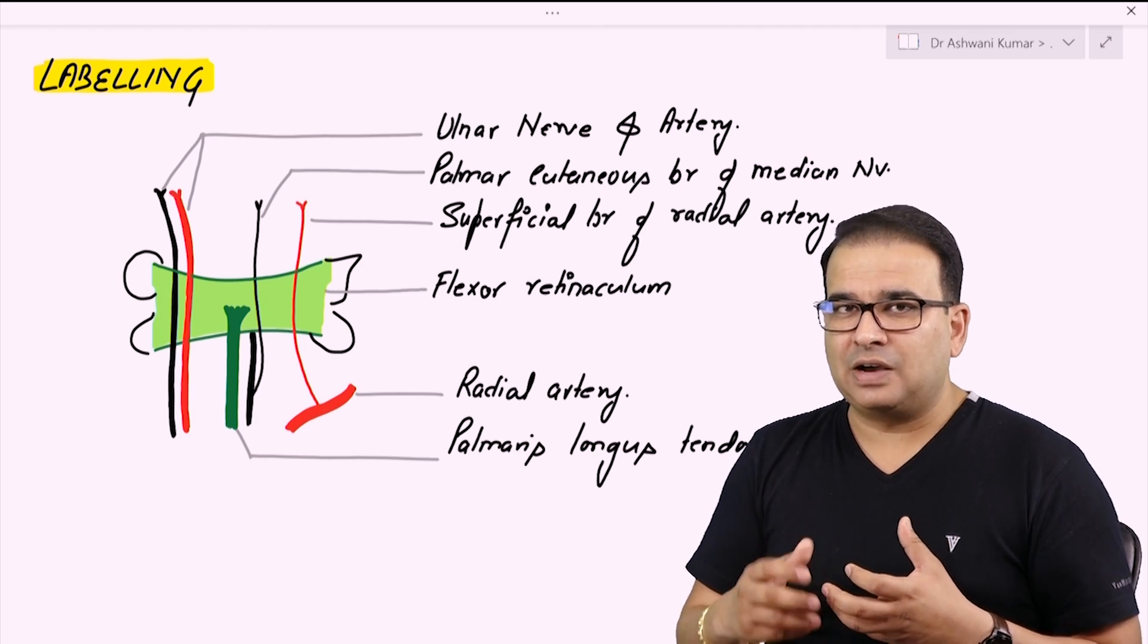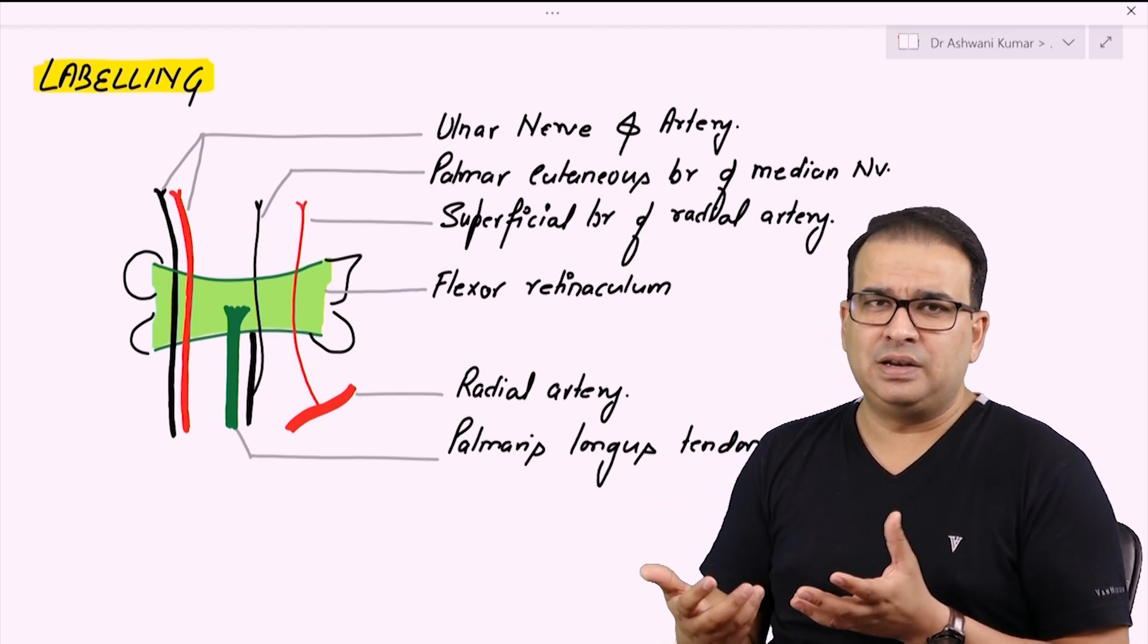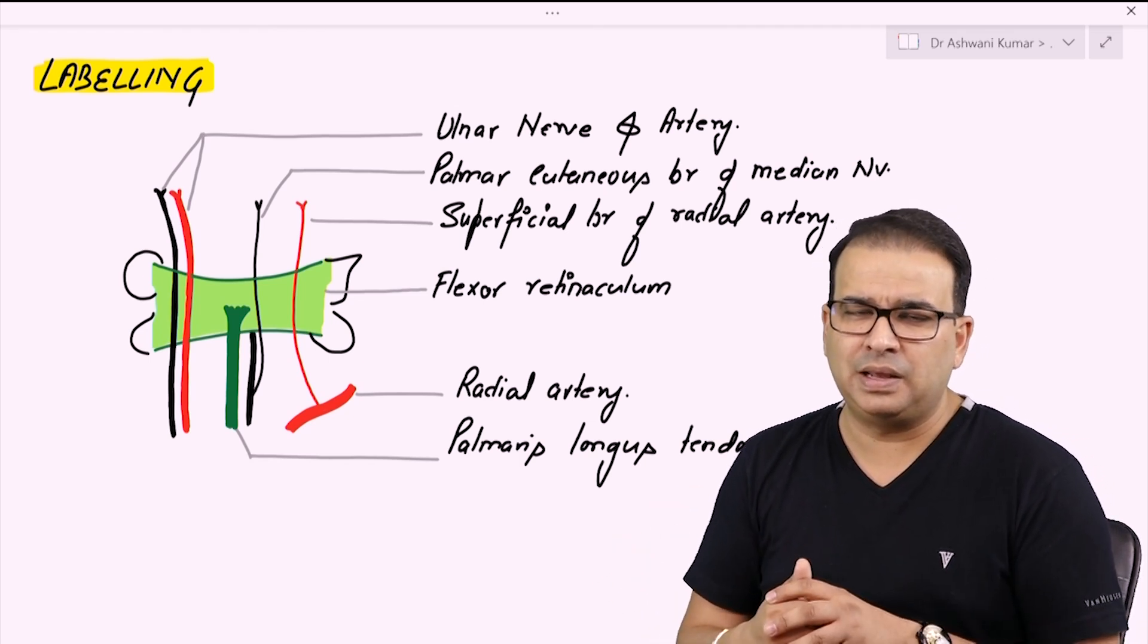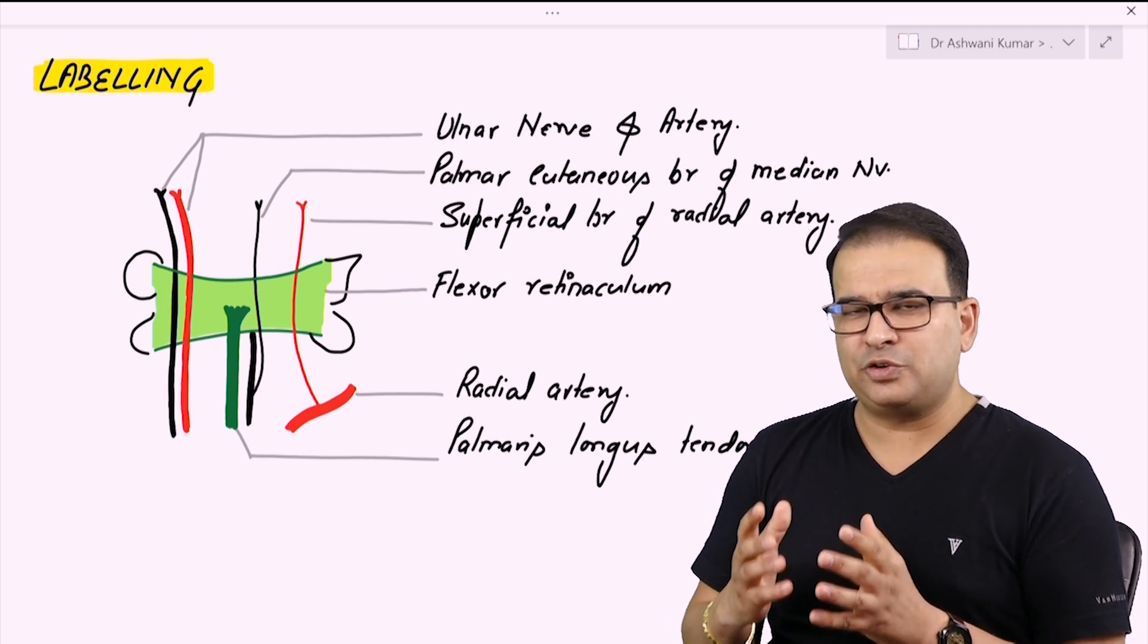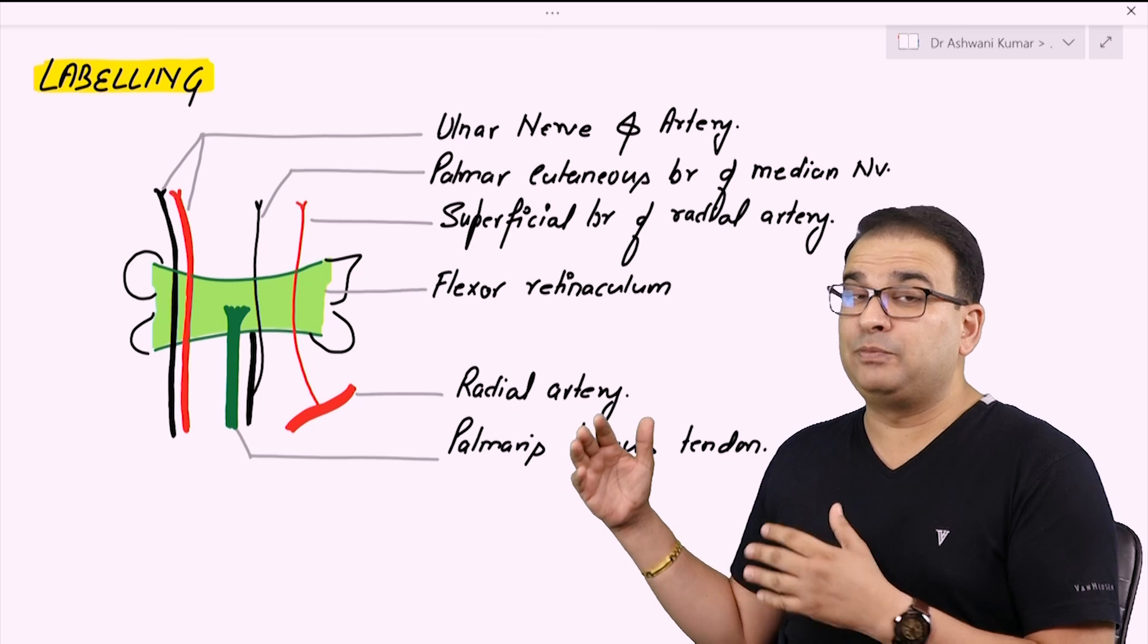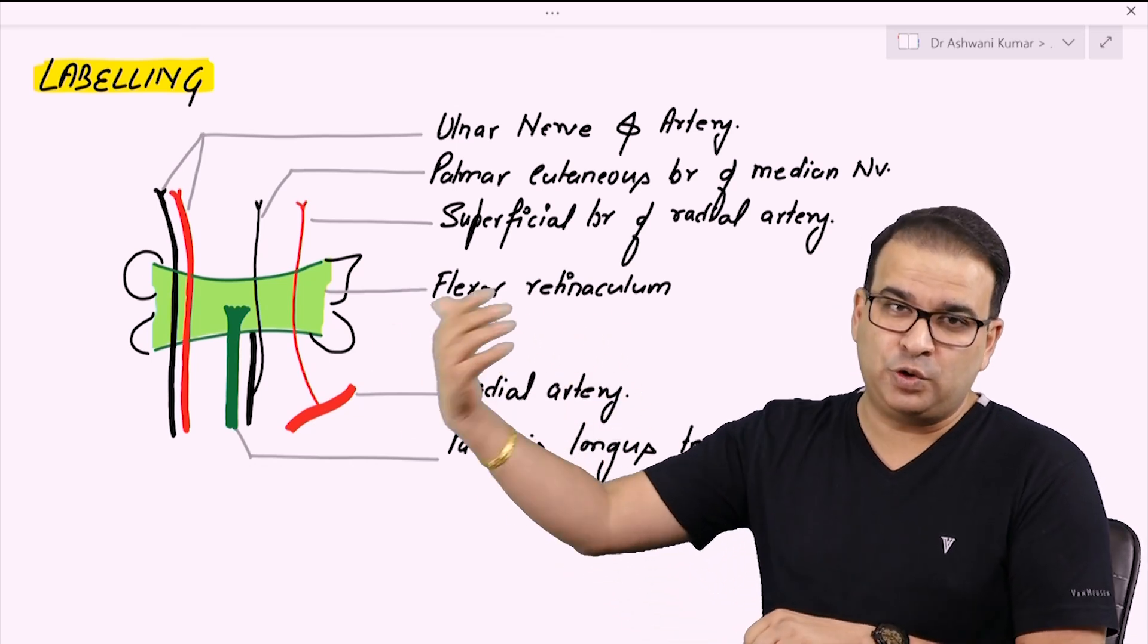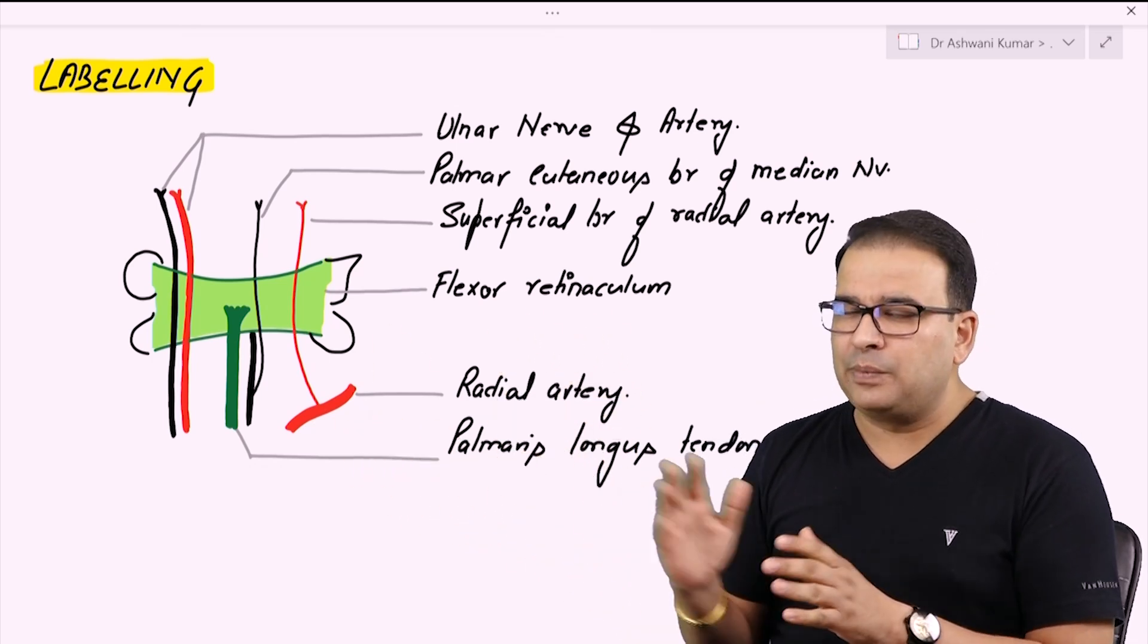When we are labeling for our answers, our labeling is very limited. Like 10 to 15 labelings might be there on any diagram. I would say there are two important suggestions for the labeling. One, try to keep your labeling toward the right side if possible. If there are too many labelings, obviously you can do it on the other side also.